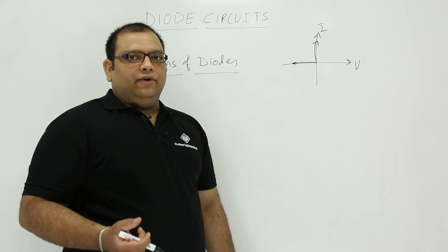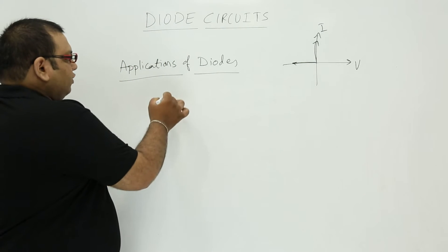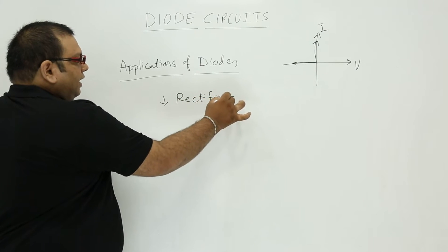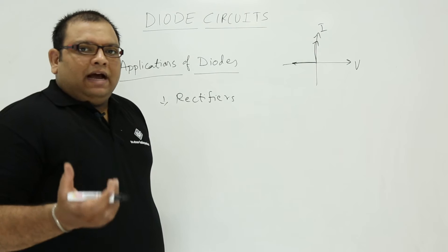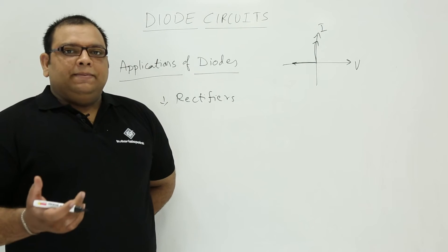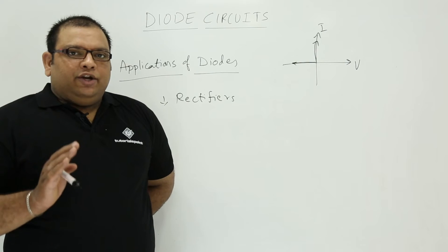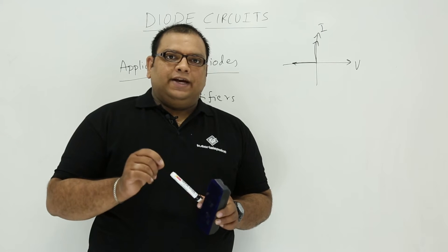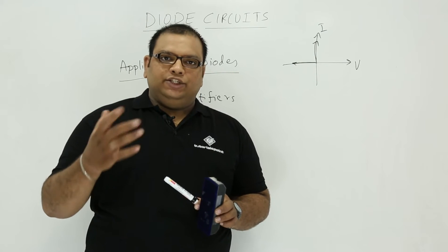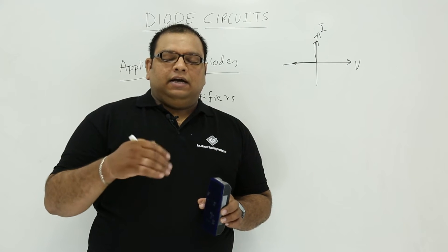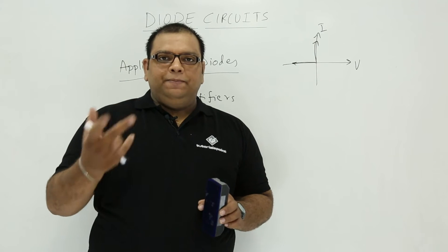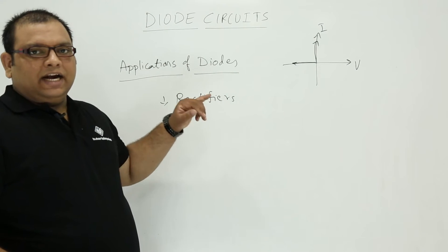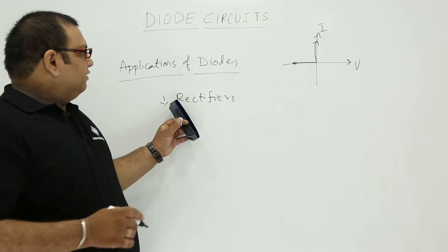Based on this characteristic, diodes have many applications. One of the major applications is rectifiers. Normally, power supply voltage is alternating current, but digital circuits and electronic appliances require DC voltage — meaning the average voltage should be more than zero. So we need to convert alternating current to DC current, and for that we use rectifiers.